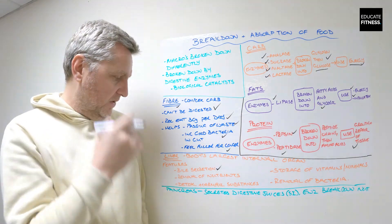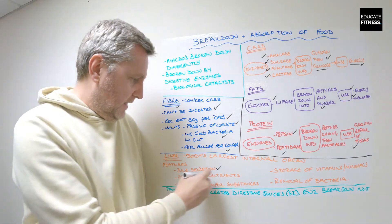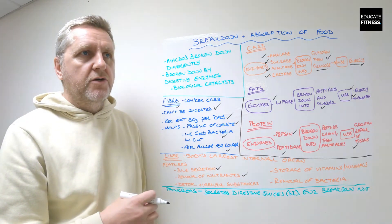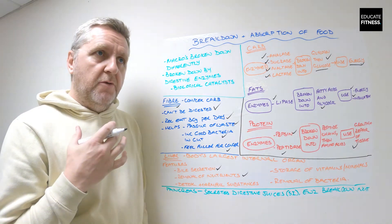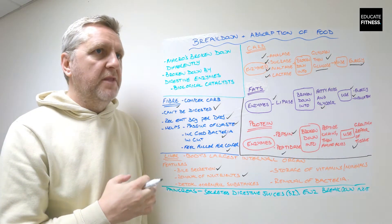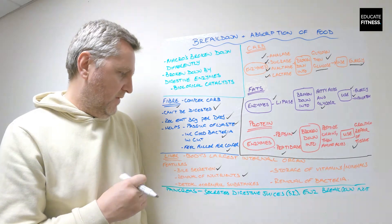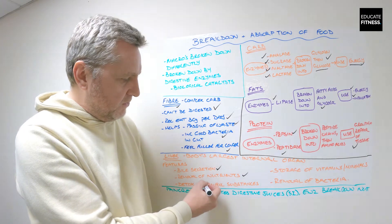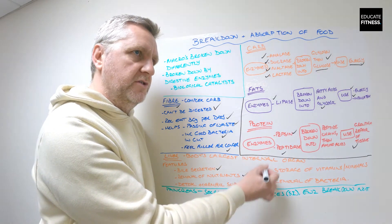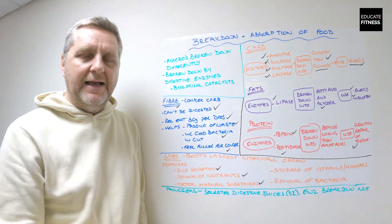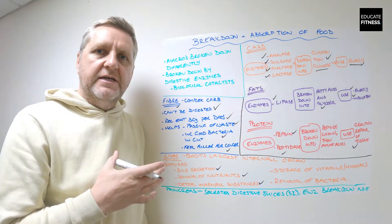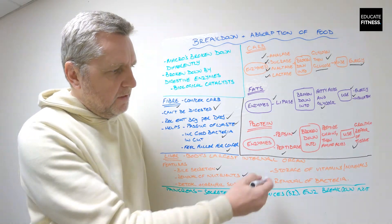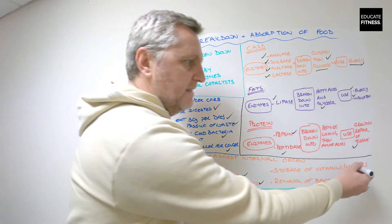Features we've got here: we've got bile secretion which is vital for the breakdown of fats in the small intestine. Another feature is the removal of nutrients from the bloodstream and also conversion of these nutrients. The liver also helps detox harmful substances from the body, like alcohol, changing the alcohol into urea which is taken out of the body in our urine. Next we've got storage of vitamins and minerals.